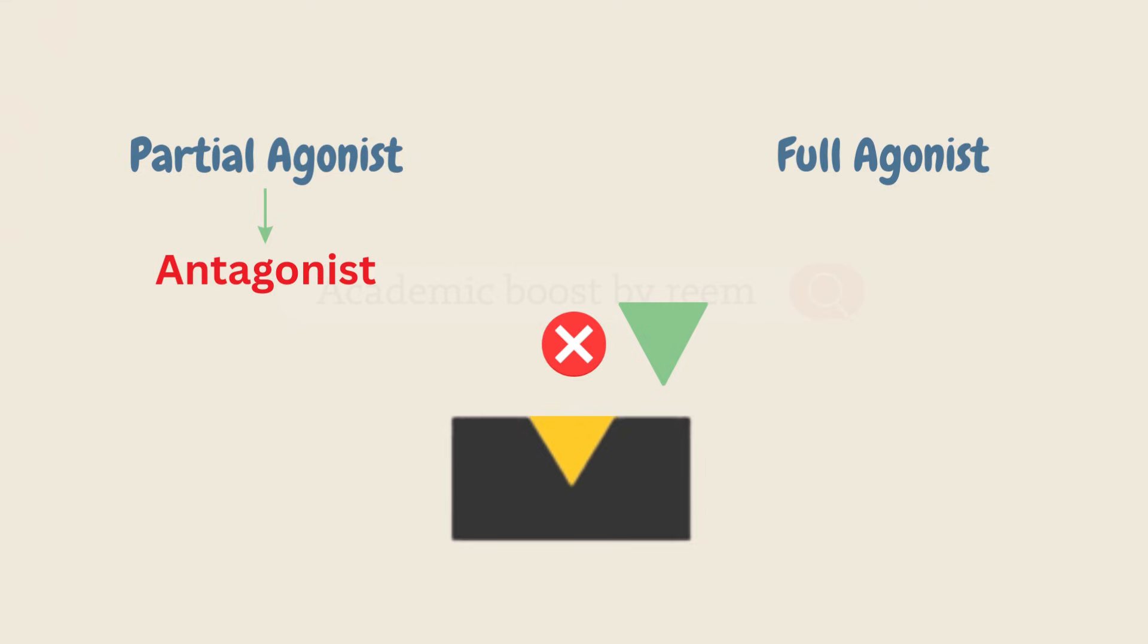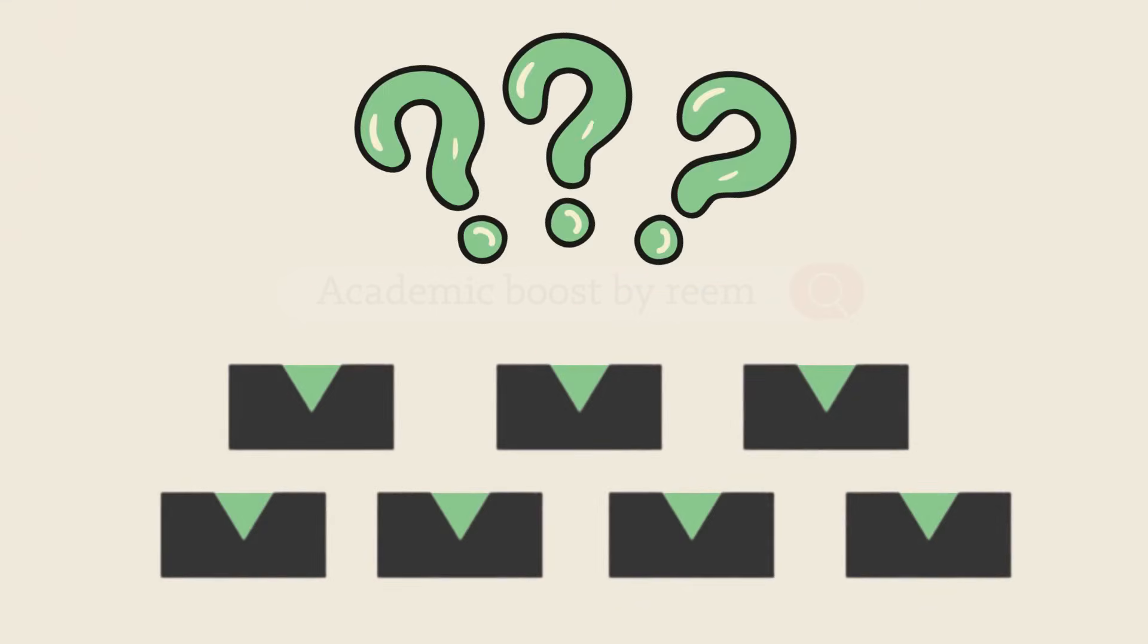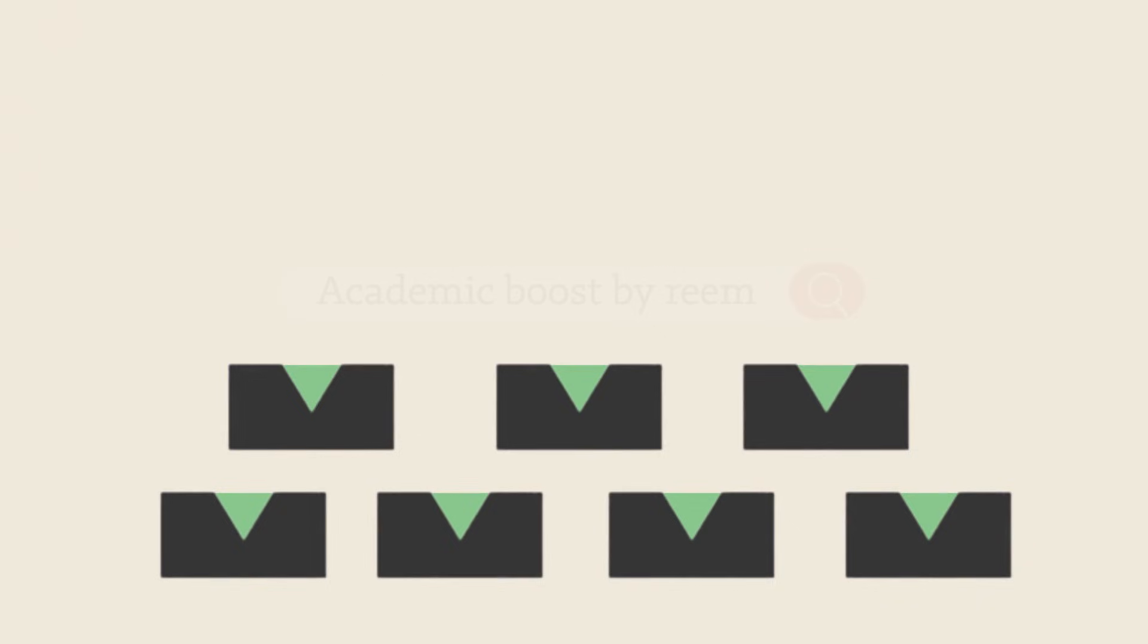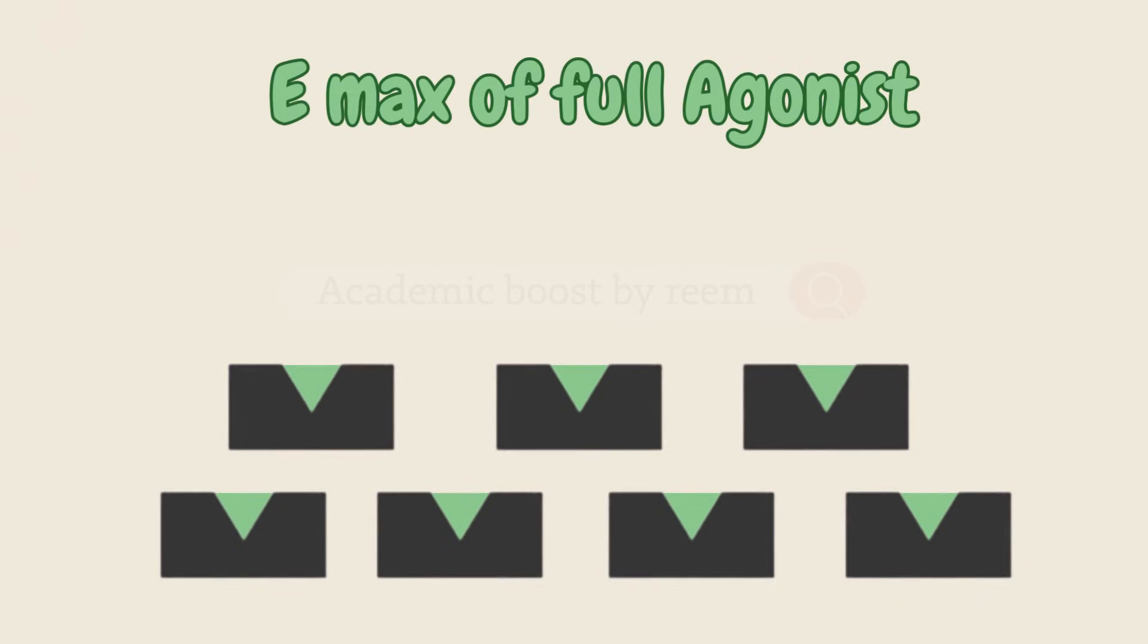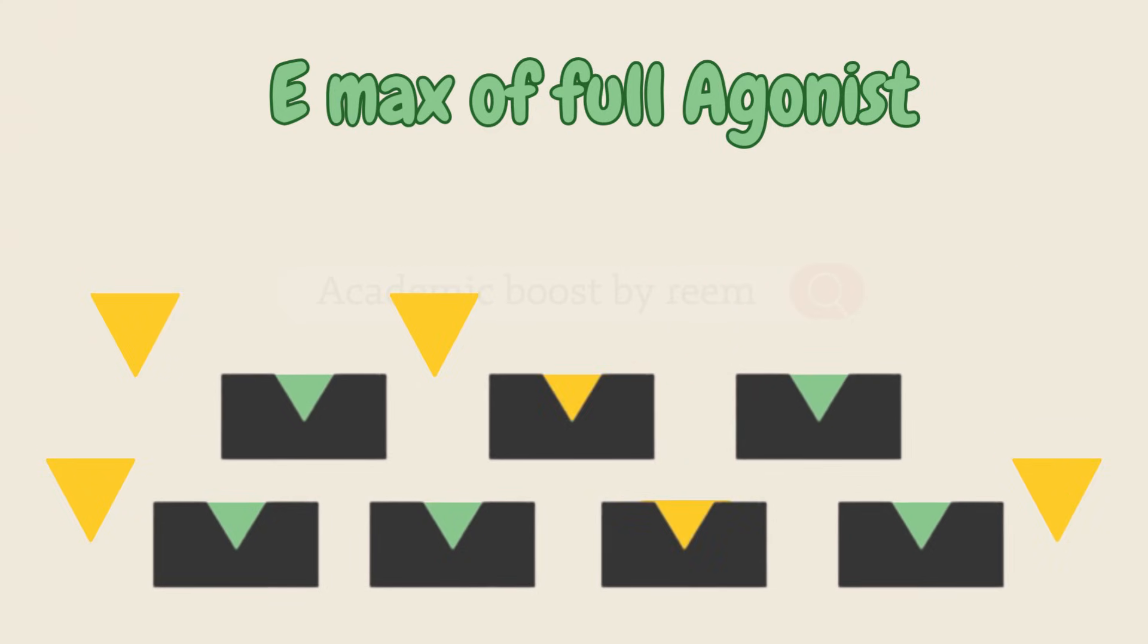Now what would happen to the Emax of a receptor saturated with an agonist in the presence of increasing concentration of a partial agonist? As the number of receptors occupied by the partial agonist increases, the Emax would decrease until it reached the Emax of the partial agonist.